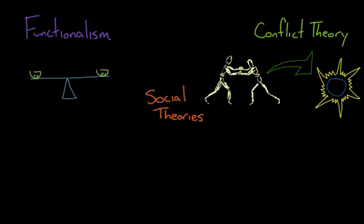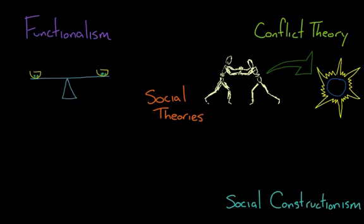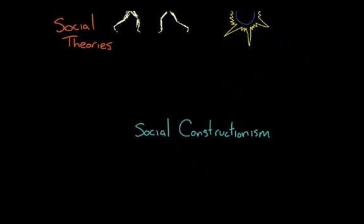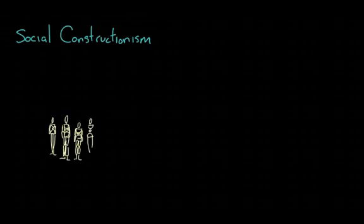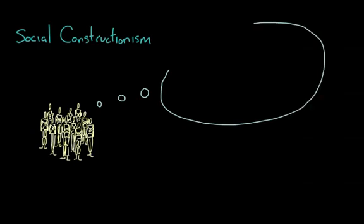Next we have the theory of social constructionism which looks at what society is rather than how it exists or changes. In social constructionism everything is created from the minds of the society. There's an agreement that something has meaning and value that the thing doesn't actually have intrinsically.